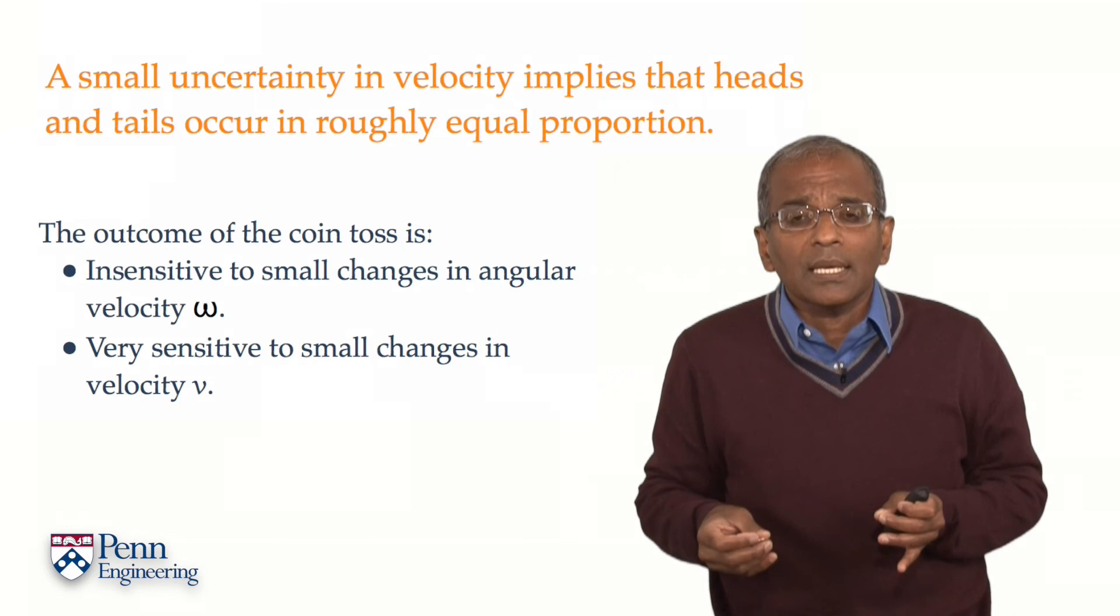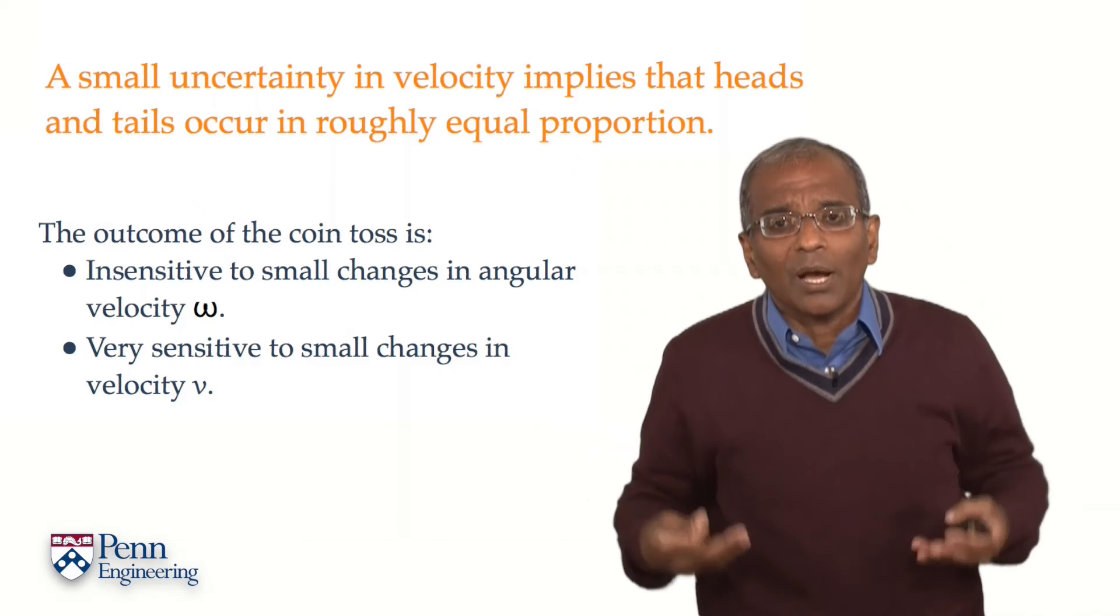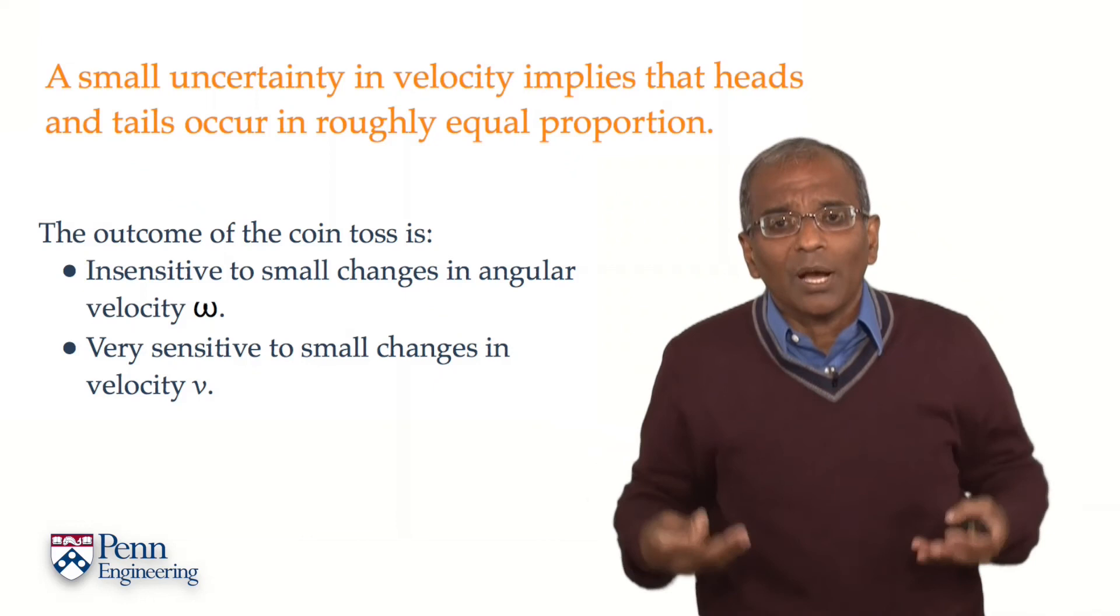A purely deterministic physical experiment governed by Newtonian laws of mechanics can be ascribed a chance-driven outcome because small uncertainties, regardless of their origin, manifest themselves into this fair chance that is observed at the end.